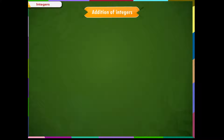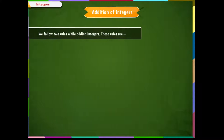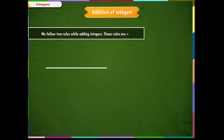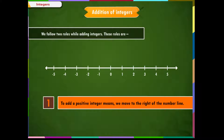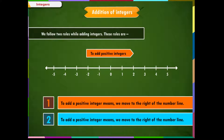Addition of Integers. We follow two rules while adding integers. Rule 1: To add a positive integer means we move to the right of the number line. Rule 2: To add a negative integer means we move to the left of the number line. Let us understand addition of integers using these examples.